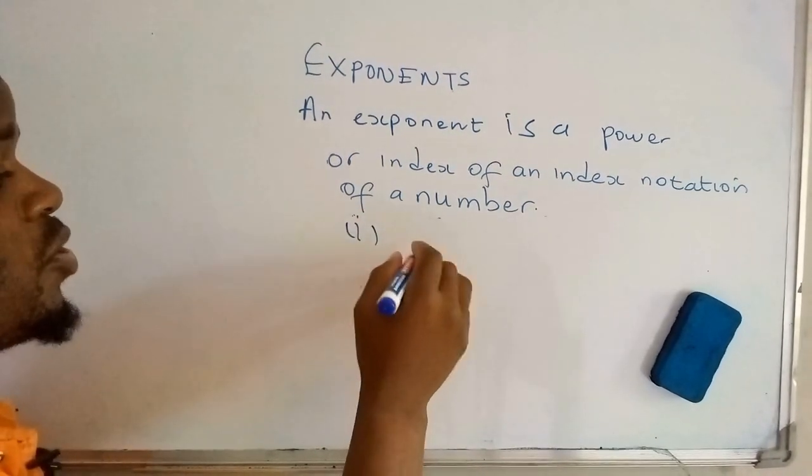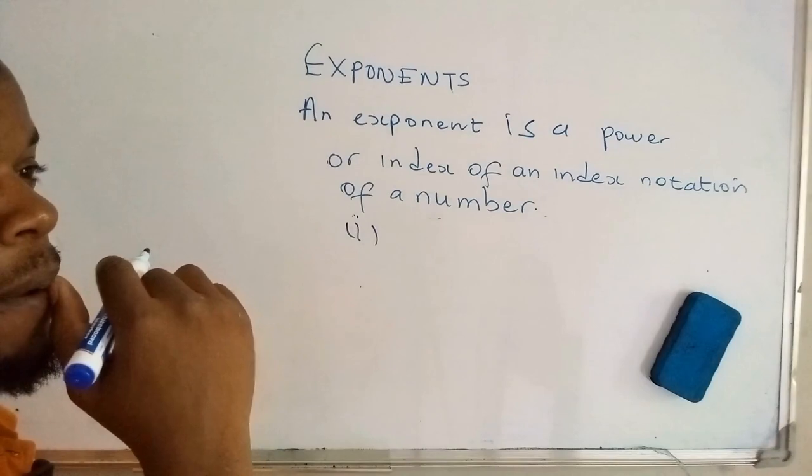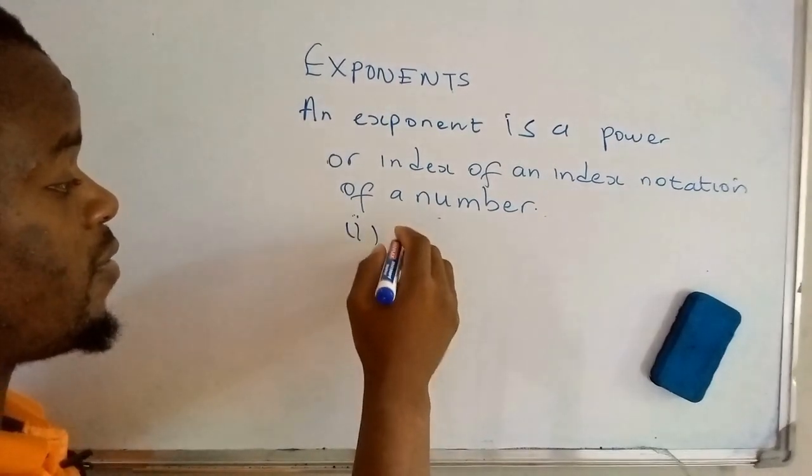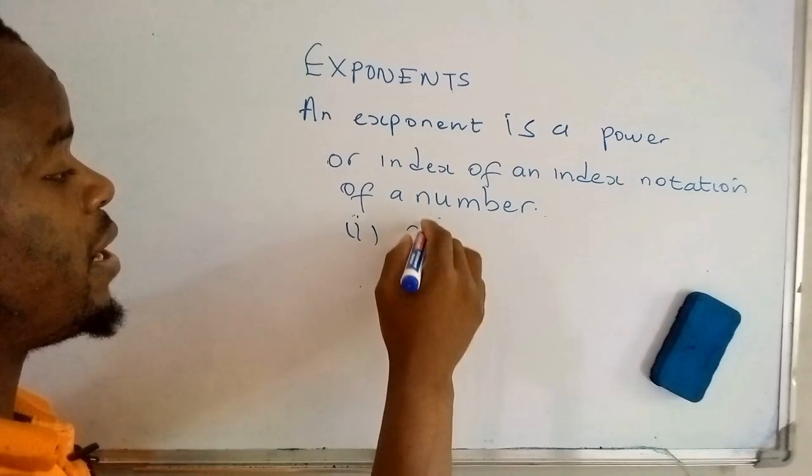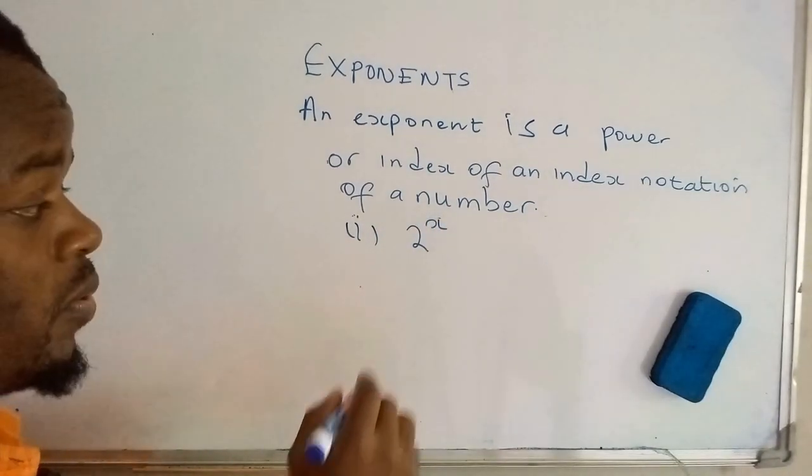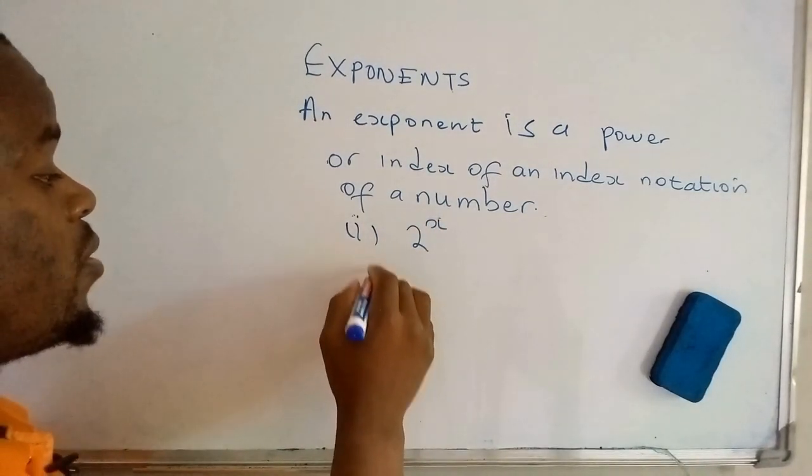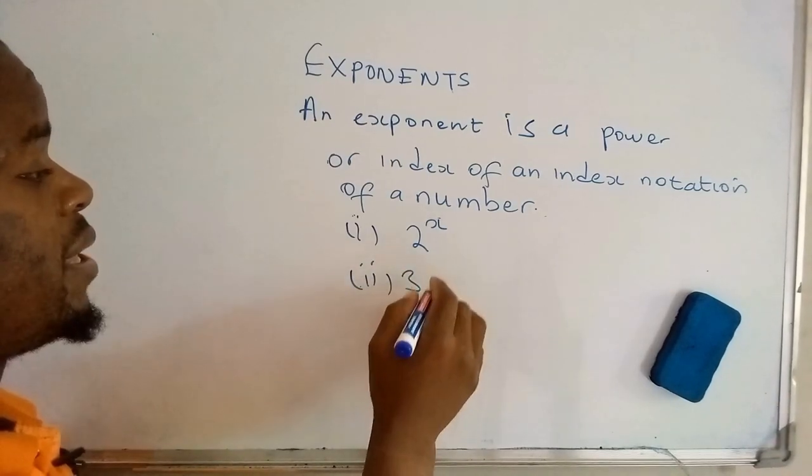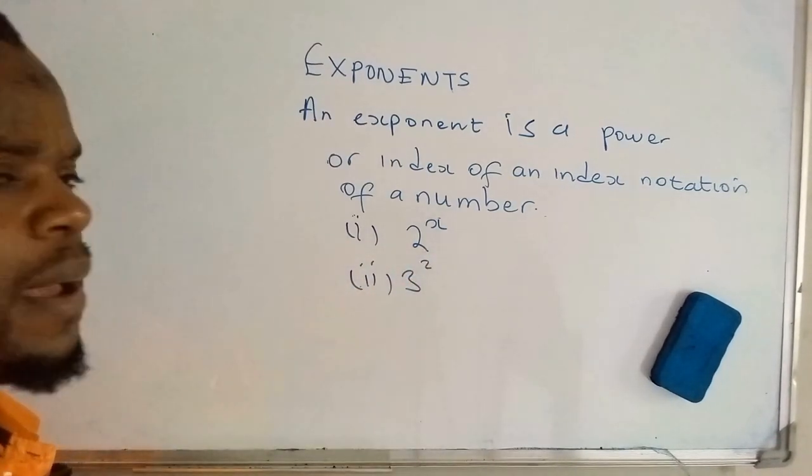So now let's look at this example so as to just paint a mental picture in your minds of what I'm talking about. If let's say we have 2 raised to 2x, and then we also have 3 raised to 2.